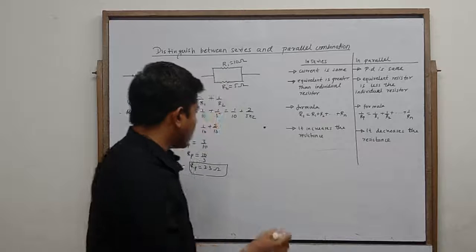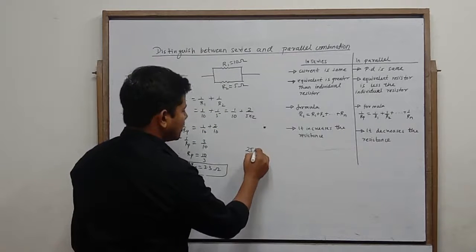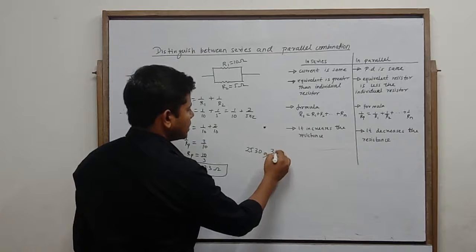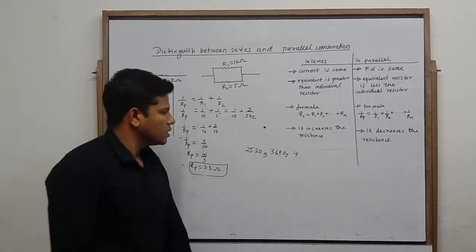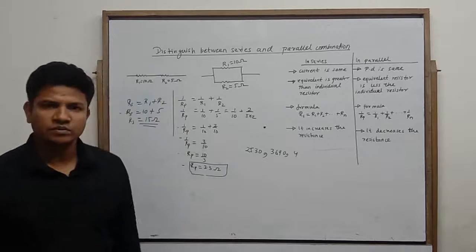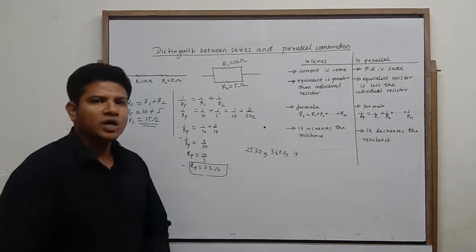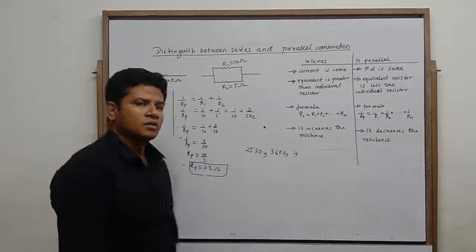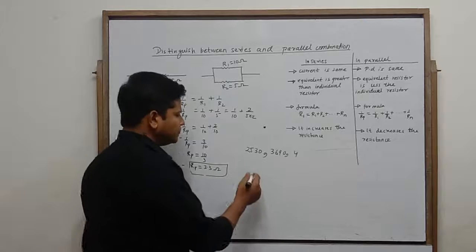अब एक example लेते हैं। तीन resistors हैं: 2530 ohms, 3690 ohms, और 4 ohms — इन तीनों को parallel में connect किया है। आपको इस parallel combination की value find करनी है। यह एक MCQ type example है जिसमें options दिए गए हैं।